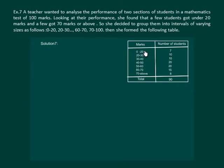So she decided to group them into intervals of varying sizes as follows: 0 to 20, 20 to 30, 30 to 40, 40 to 50, 50 to 60, 60 to 70, and 70 to 100.